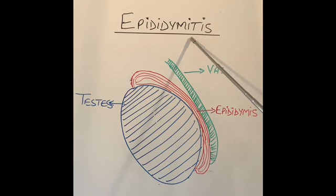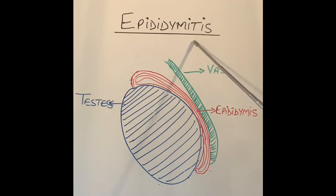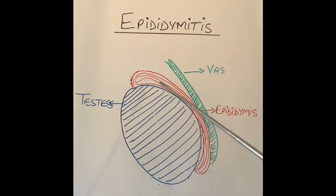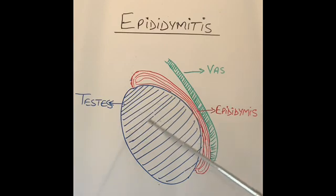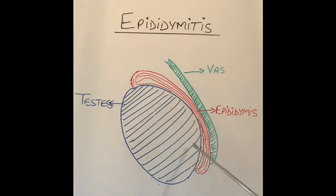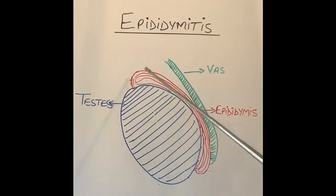To understand what epididymitis is, we need to look at the anatomy of the testicle and the tubes around the testicle. In the blue, I've drawn this oblong structure which is the testicle. In the testicle, there are a number of tiny tubules or tubes which take the sperm from the testicle, and from the testicle they go into a tube which I have drawn in red just outside the testicle, that is called the epididymis.